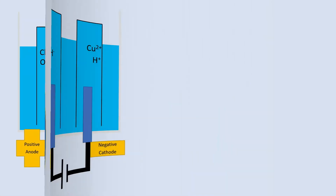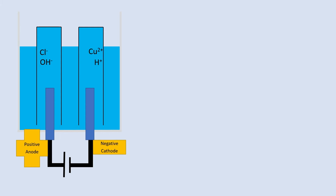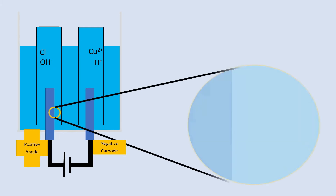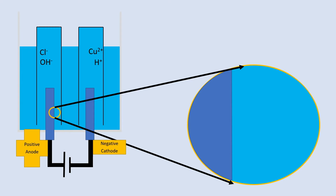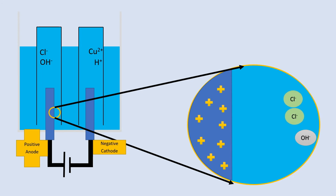Now let's have a look at what happens at the other electrode. Zooming in, this electrode starts with some electrons which are taken away, making it the anode — positive. The positive electrode attracts the hydroxide ion, but again it is too reactive, so the chloride ions are attracted instead. They lose their electrons and chlorine gas is given off.